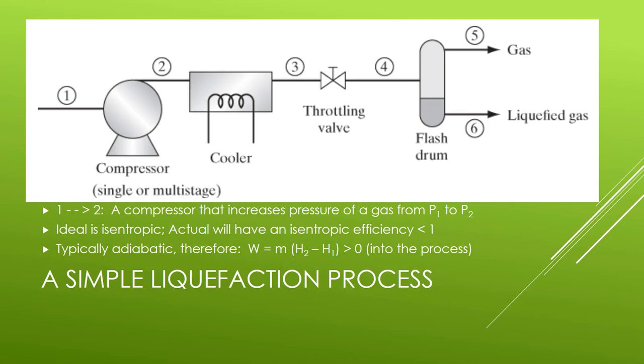If we look at each one of these steps, the compressor, steps one to two, a compressor is going to increase the pressure of the gas from P1 to P2. Ideally, it's isentropic, but in reality, we're going to have an isentropic efficiency that's going to be something less than one. Typically,